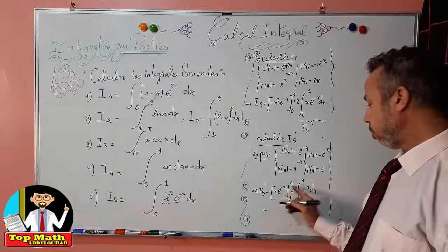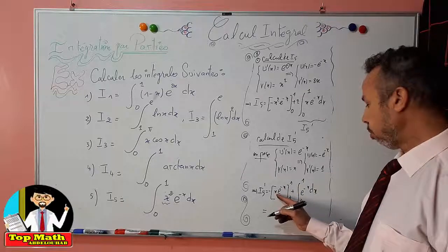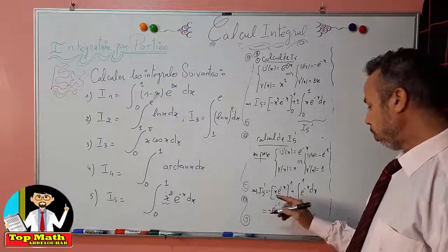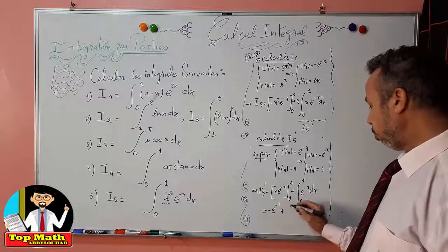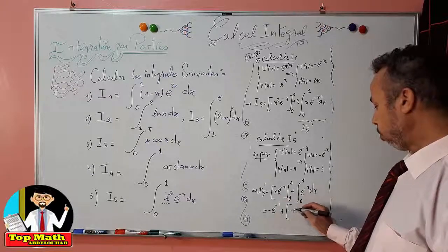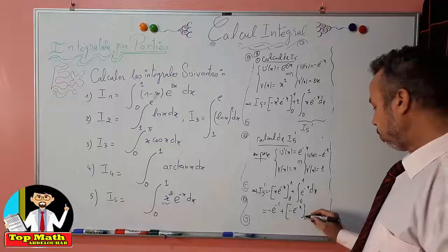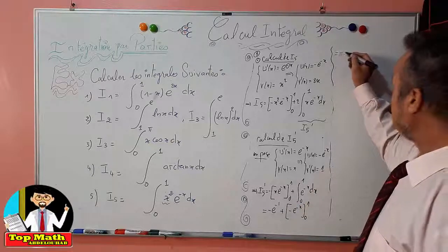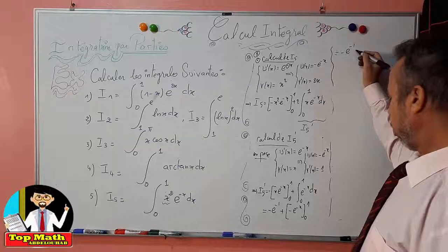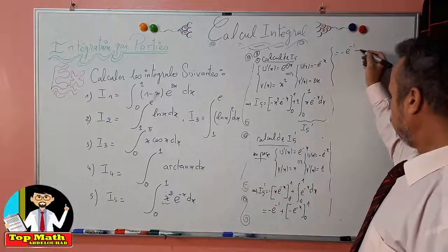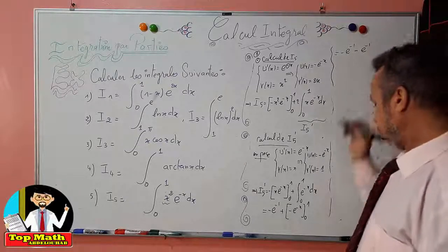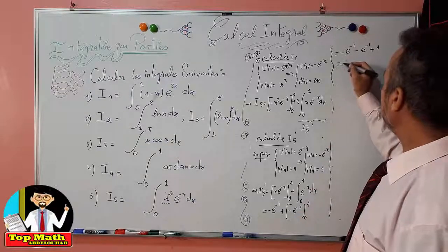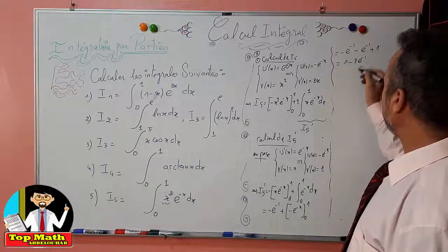Evaluating, we get: at x = 1, minus e^(−1), minus e^(−1), with the value at 0, plus the primitive [−e^(−x)] from 0 to 1. This gives: −e^(−1) minus e^(−1), plus 1, plus 1 — wait, simplifying: I5' = 1 − 2e^(−1).